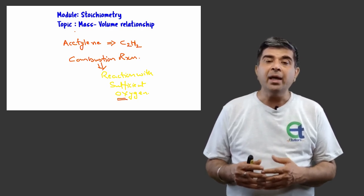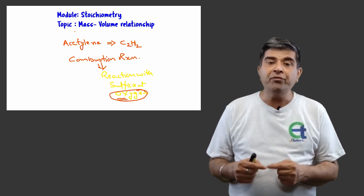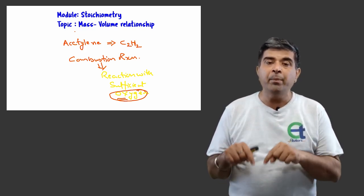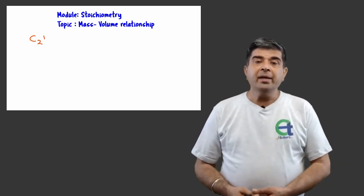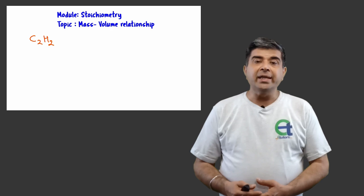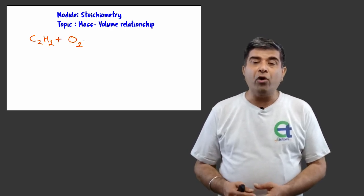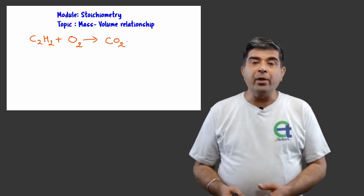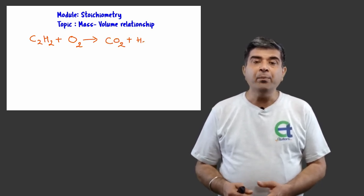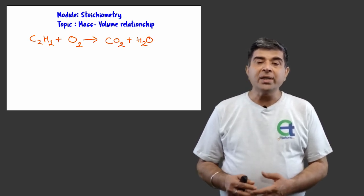Specifically to understand balancing, you can watch my video. The link of the video is in the description box here below. Eventually, the balanced equation would be one mole of acetylene reacts with 5 by 2 or 2.5 moles of oxygen to produce 2 moles of carbon dioxide and 1 mole of water.